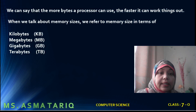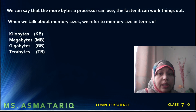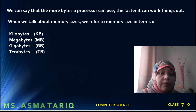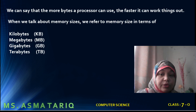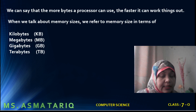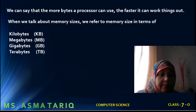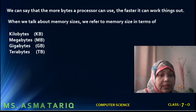We can say that the more bytes a processor can use, the faster it can work things out. When we talk about memory sizes, we refer to the memory size in terms of kilobytes (KB), megabytes (MB), gigabytes (GB), and terabytes (TB).